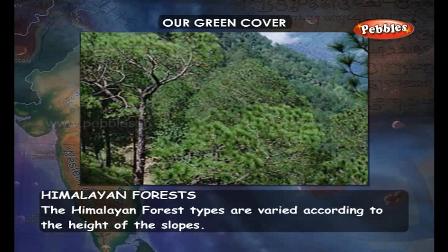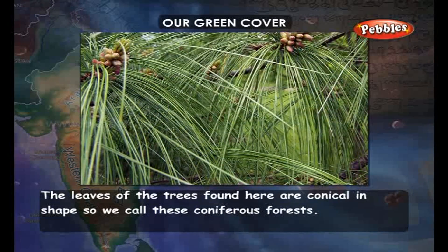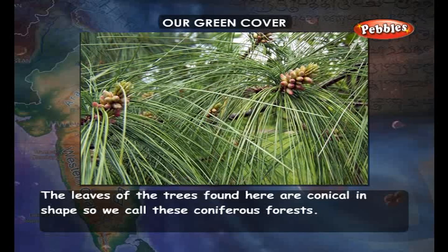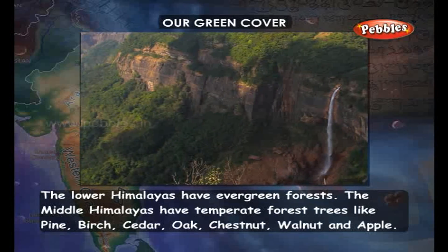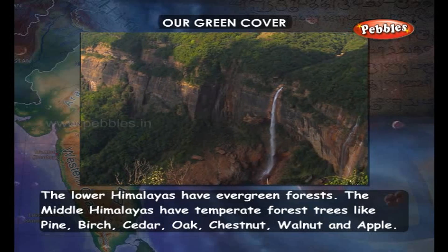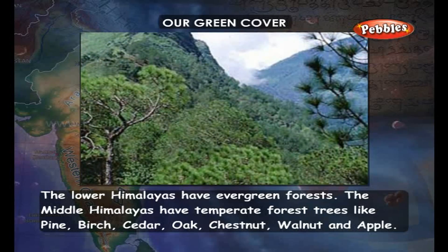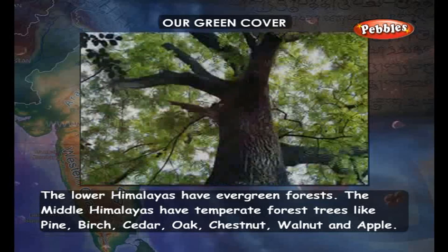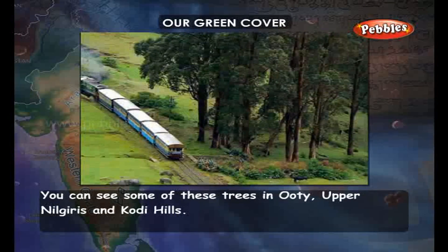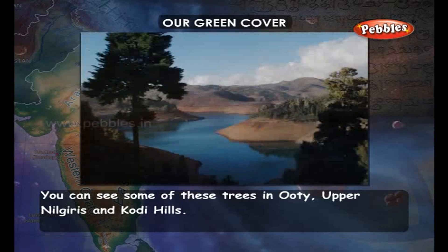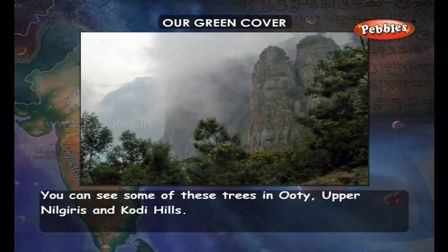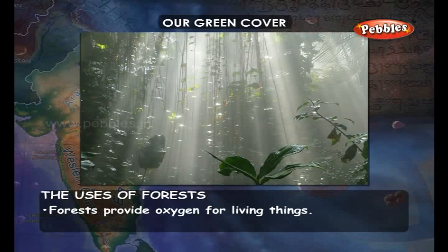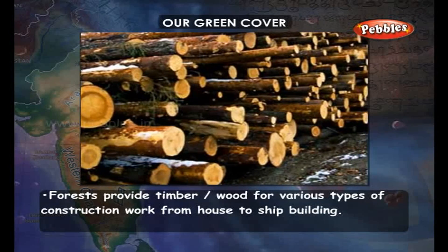The Himalayan forest types vary according to the height of the slopes. The leaves of trees found here are conical in shape, so these are called coniferous forests. The lower Himalayas have evergreen forests. The middle Himalayas have temperate forests with trees like pine, birch, cedar, oak, chestnut, walnut, and apple. Some of these trees can also be seen in Ooty, the upper Nilgiris, and Kodaikanal hills.